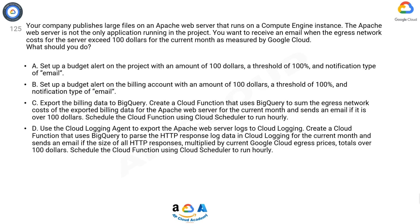D: Use the Cloud Logging Agent to export the Apache web server logs to Cloud Logging. Create a Cloud Function that uses BigQuery to parse the HTTP response log data in Cloud Logging for the current month and sends an email if the size of all HTTP responses multiplied by current Google Cloud egress prices totals over $100. Schedule the Cloud Function using Cloud Scheduler to run hourly.